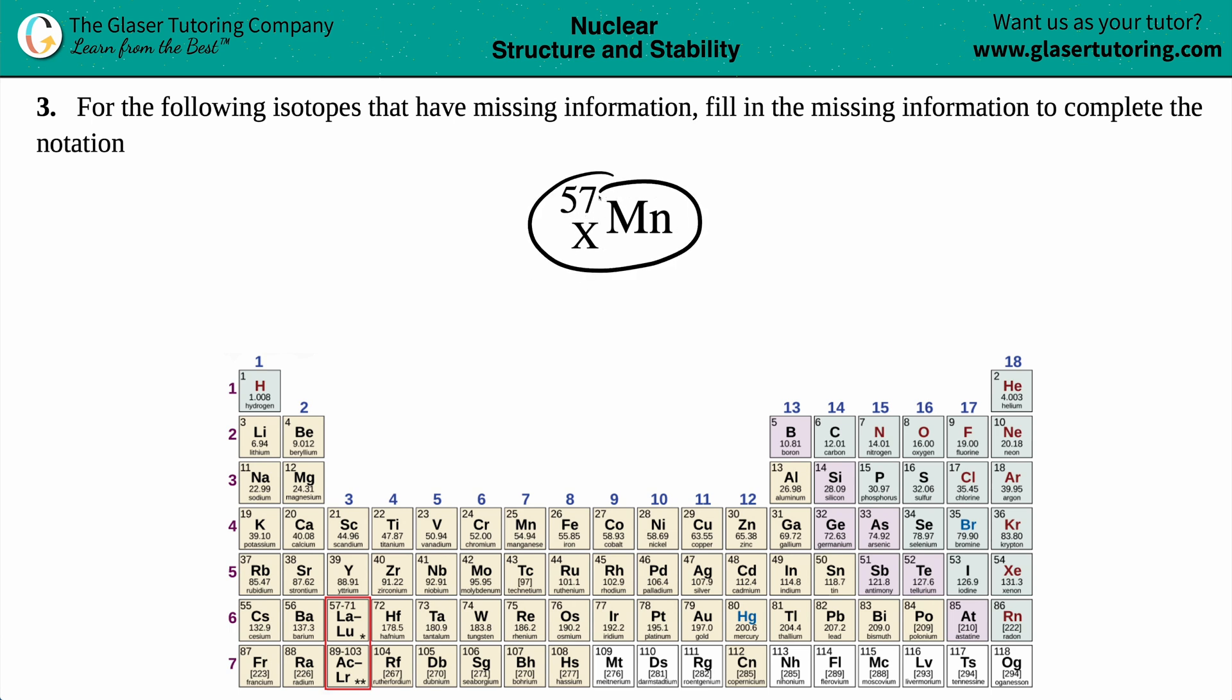In order to complete this notation, there always should be two numbers on the left-hand side and an element on the right. So in essence, what we're trying to find out is this x number on the bottom. In general, with these types of notations, the number on the top represents the atomic mass.